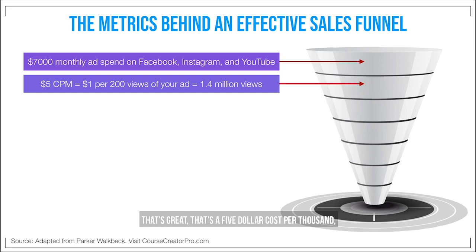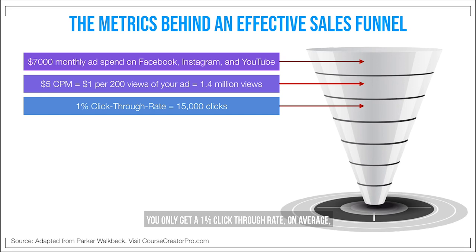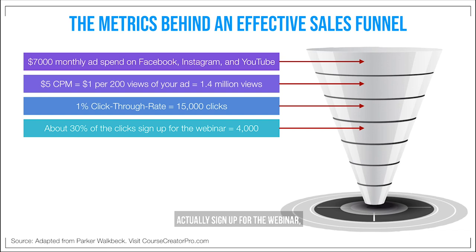That's a $5 cost per thousand, which means for every dollar spent, you get 200 views of your ad, resulting in 1.4 million views. Not everybody clicks through on the ad — you only get a 1% click-through rate on average, which results in 15,000 clicks. So you spent $7,000 to get 1.4 million views, resulting in 15,000 clicks.